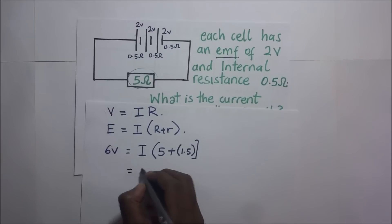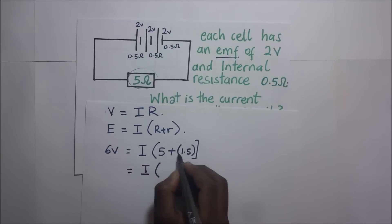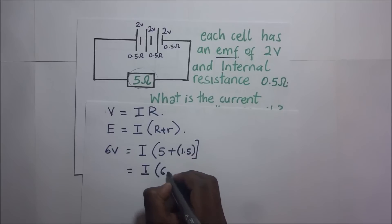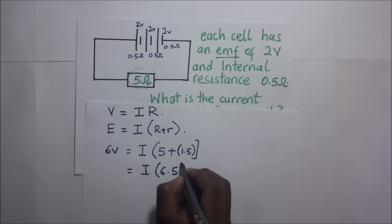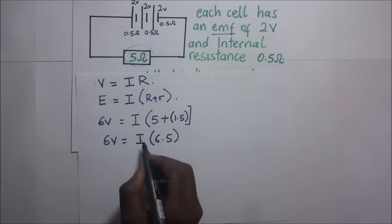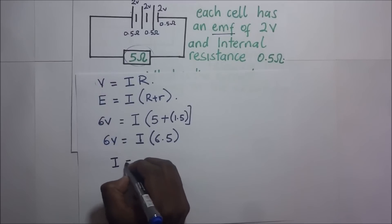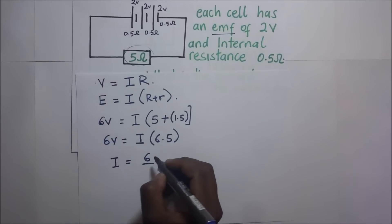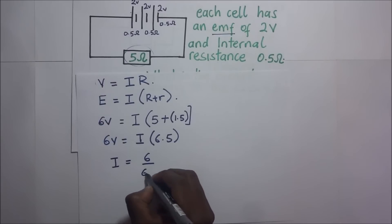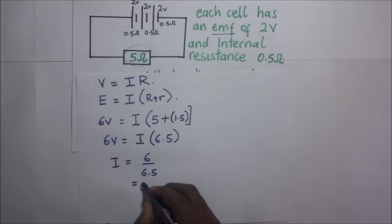So our equation becomes I times 6.5 equals 6 volts. When we make I the subject of the formula, we end up with I equals 6 over 6.5, and we shall get our answer from there.